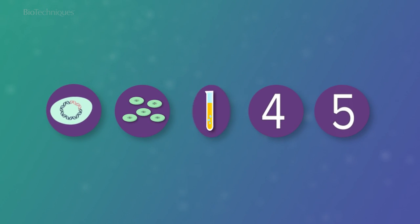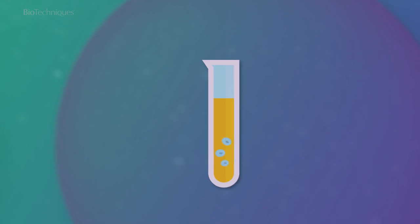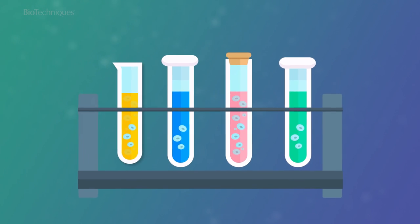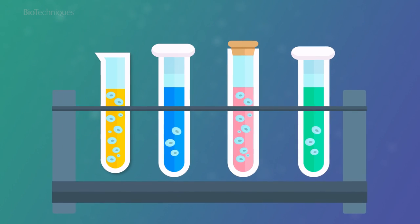Step three: cultivation and media optimization. Once screening and clone selection is complete, the best performing clones are expanded. This is when the media and culture conditions are optimized to yield high cell growth.